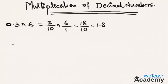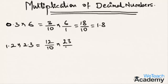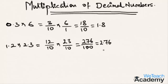Now let's take the second example: 1.2 multiplied by 2.3, which equals 12 by 10 multiplied by 23 by 10. The product of the denominators — 10 times 10 — is 100, and the product of the numerators — 12 times 23 — is 276. Hence 276 by 100 is 2.76, as we have two zeros in the denominator.